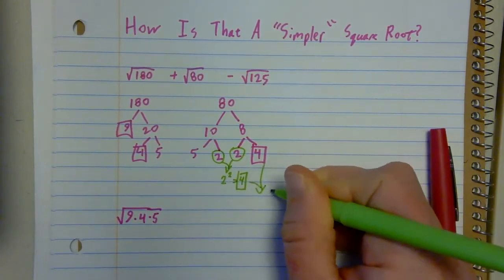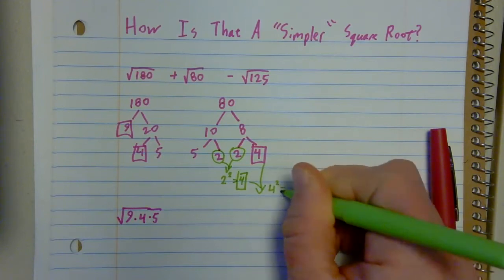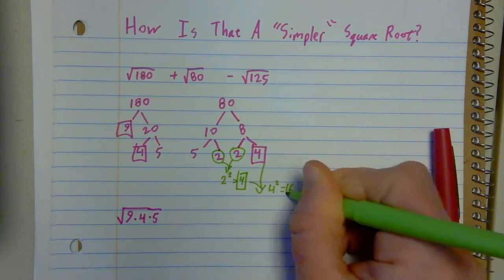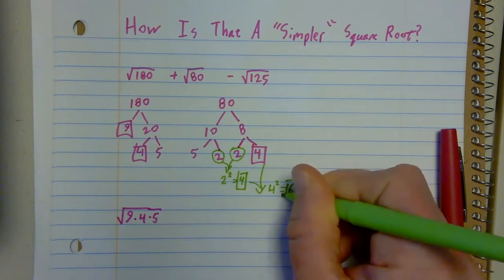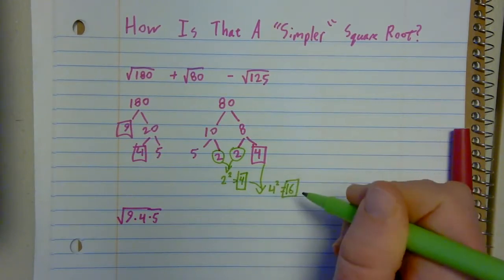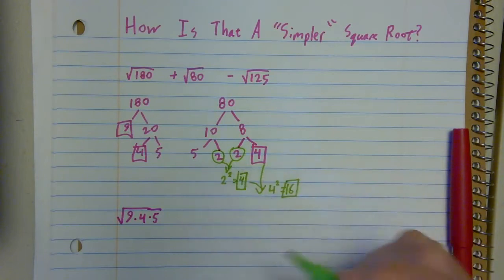Well, 4 times 4 would be 4 squared, which is 16. So I can make a pretty big perfect square here. I end up with 16 and I have that 5.